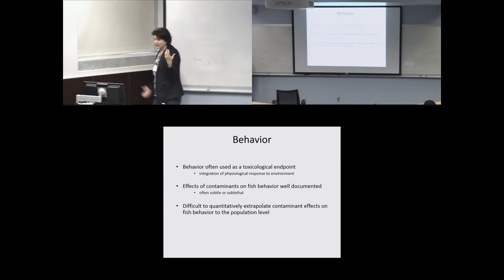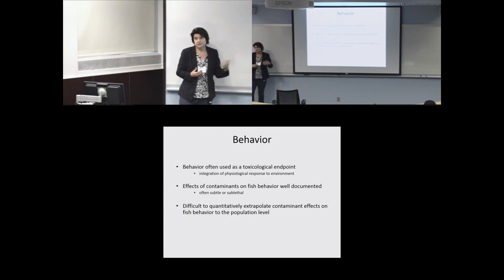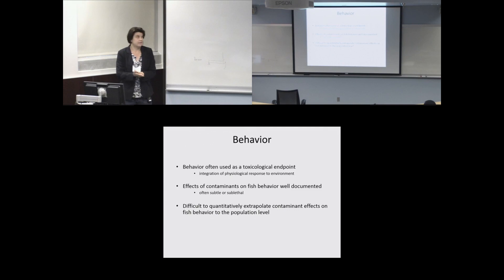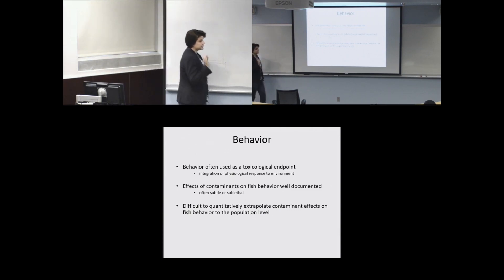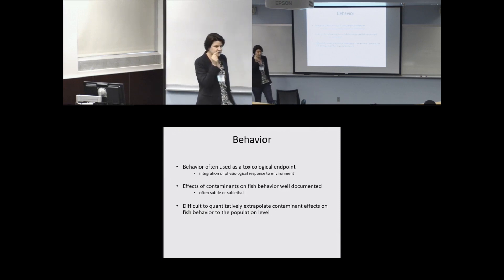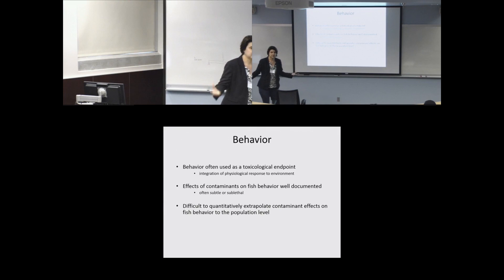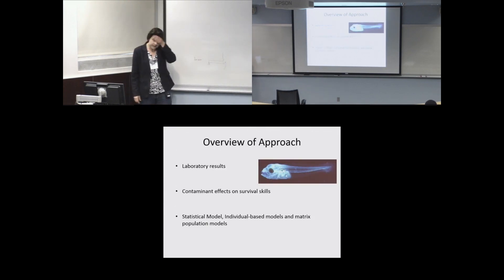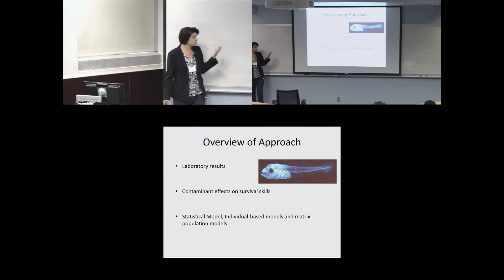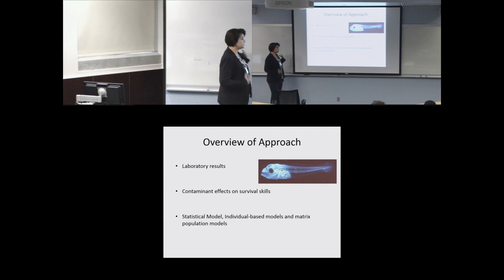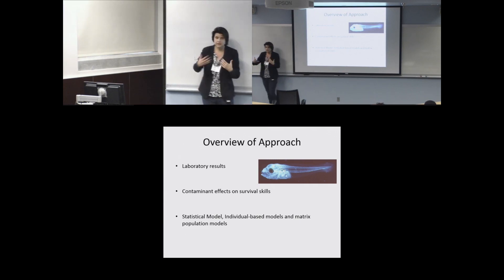Behavior is used as a toxicological endpoint a lot because it's really powerful — it's an integration of the fish's physiological response to its environment, internally and externally. There have been lots of studies on the effects of contaminants on fish behavior, but they're often really subtle or sublethal, which makes it challenging to link to population-level outcomes. What does a change in swimming speed mean to a whole population of fish, for example? In my dissertation with Kenny Rose, we used laboratory results looking at contaminant effects on survival skills of larval fish, and used statistical models, individual-based models, and matrix population models to make those linkages.